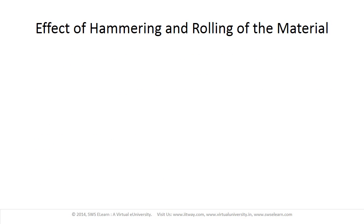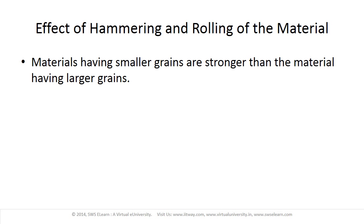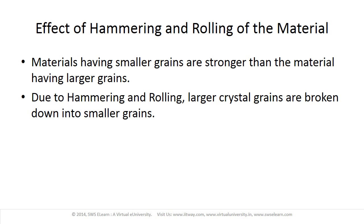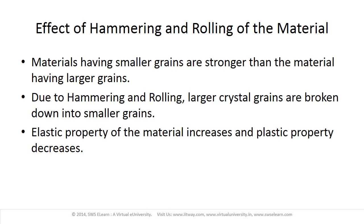The next effect is hammering and rolling. Materials with smaller grains are stronger than materials with larger grains. Due to processes like hammering and rolling, the large crystal grains are broken down into smaller grains. Therefore, the elastic property of the material increases and the plastic property decreases.